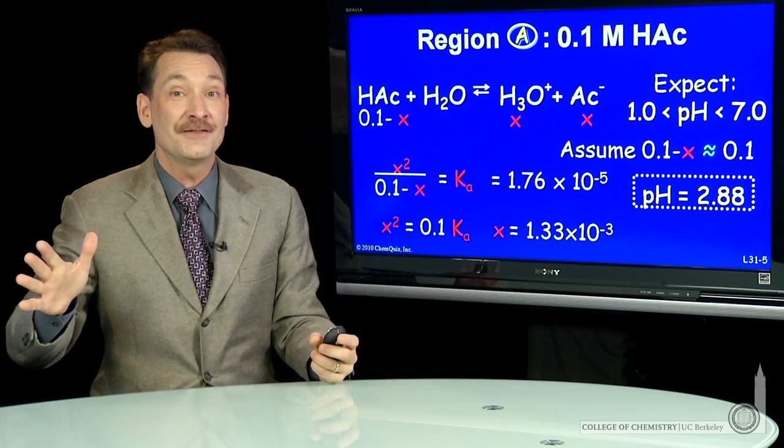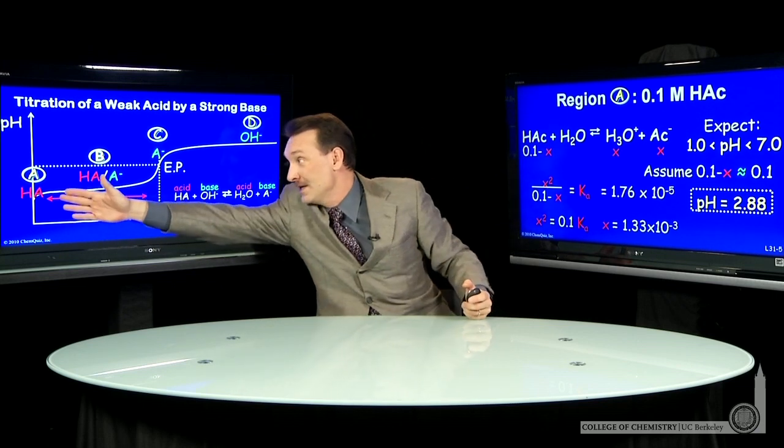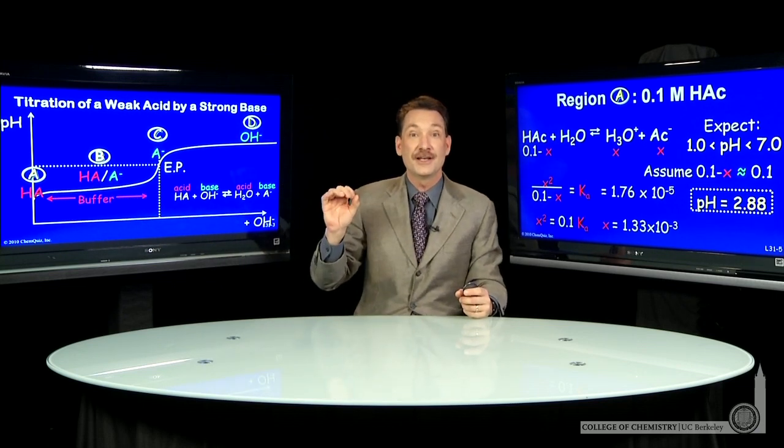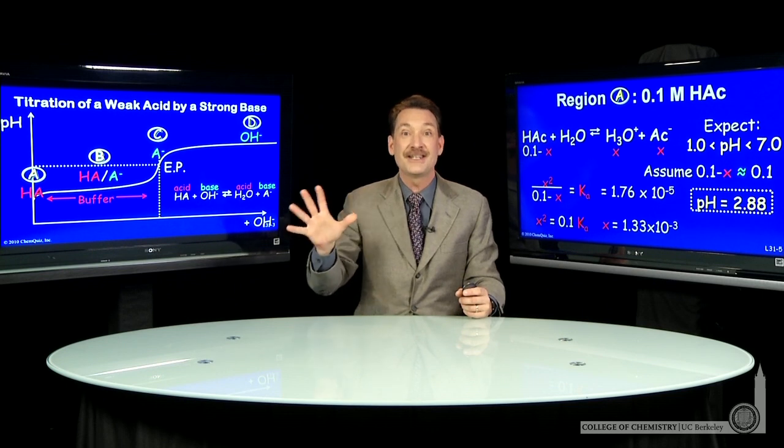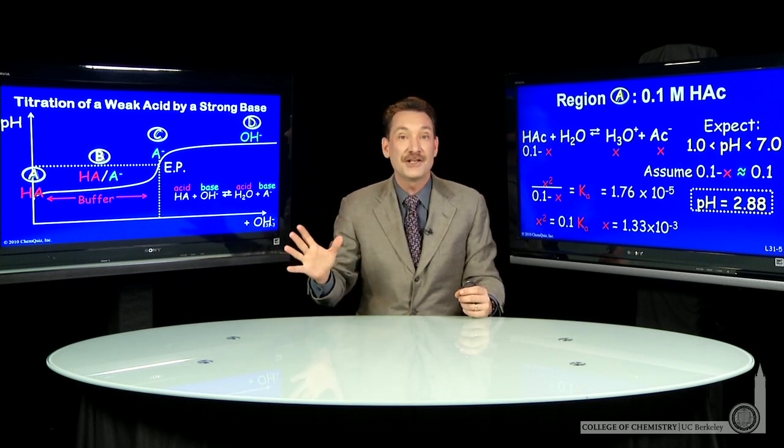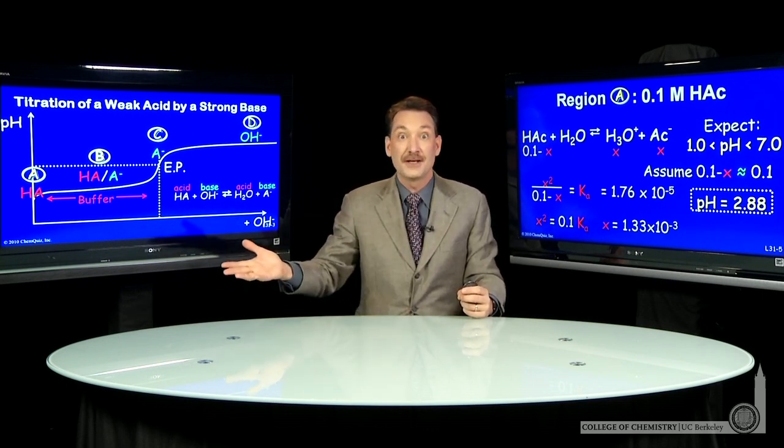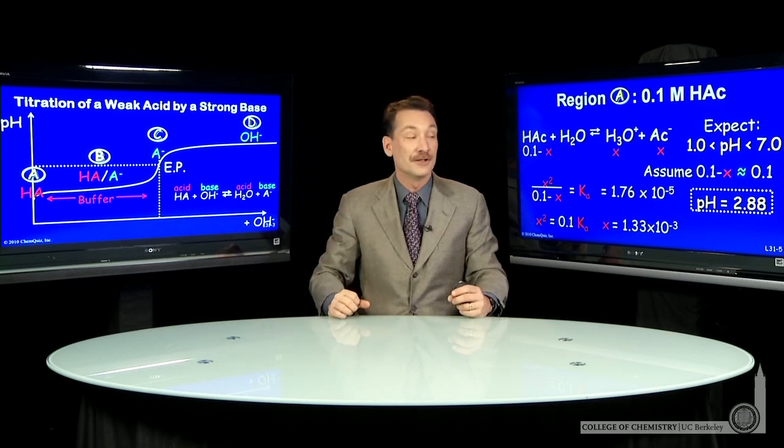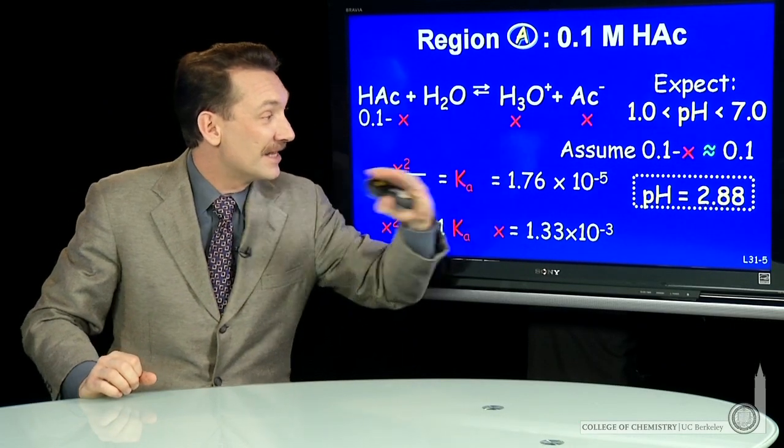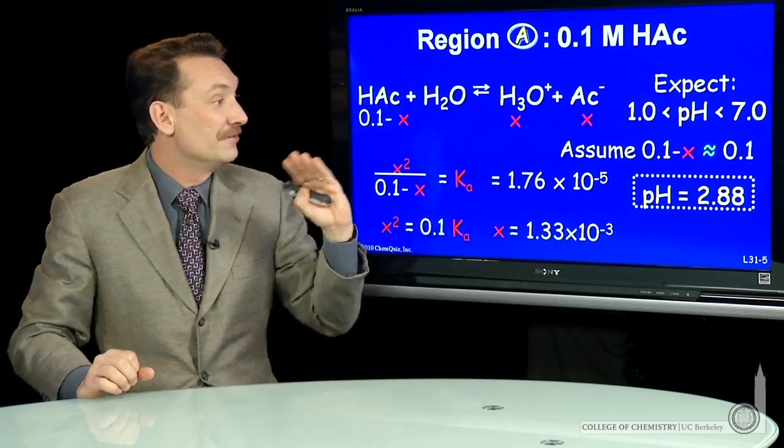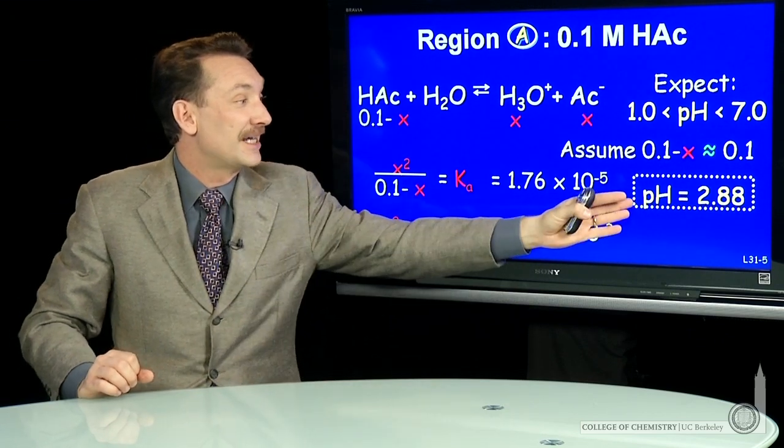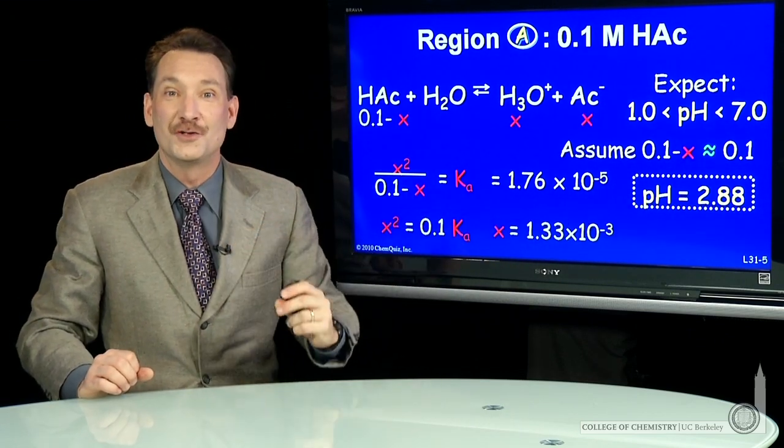So at the beginning of the titration curve, again, we're right here where we have a solution of just a weak acid. I haven't had any base, the pH can be calculated just as if it were a weak acid solution. Weak acid solution of acetic acid, the initial pH of 0.1 molar acetic acid has an initial pH of 2.88.